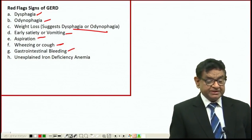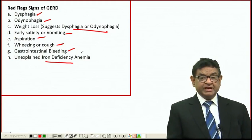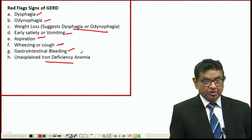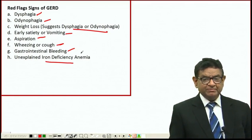GI bleed means massive ulceration which can precipitate iron deficiency anemia. If a male patient comes with iron deficiency anemia and we don't know the reason, remember: any male patient with iron deficiency anemia, GI bleed should be ruled out. The GI bleed may be upper or lower.